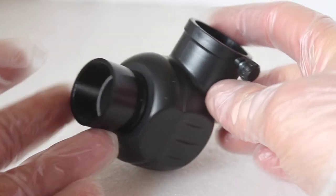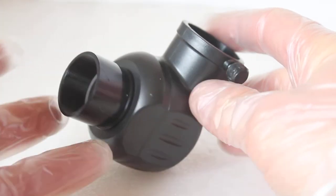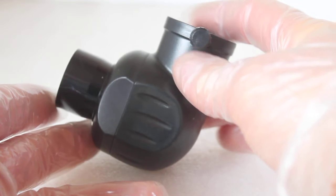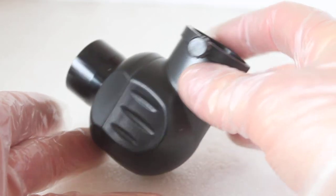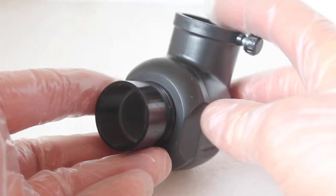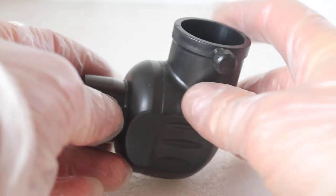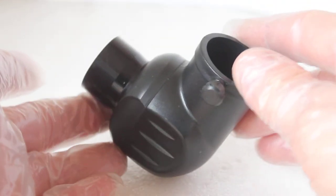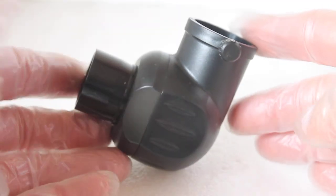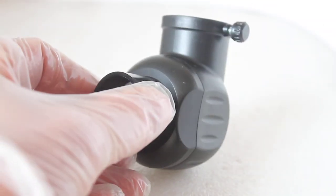So there we are, that's a quick look at the Ostara Optical Hardware 90-degree prism diagonal, 1.25 inch. This one is available to purchase in the link below. So as always, I hope this helps. Thank you very much for watching, and we shall see you next time.